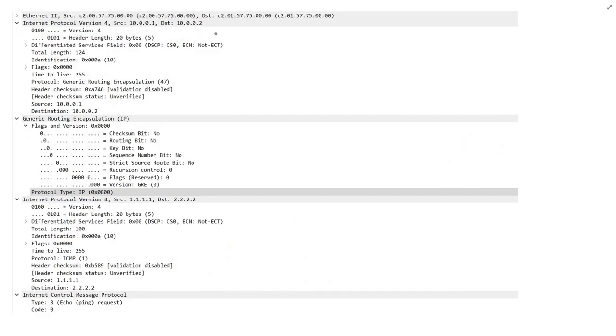In Wireshark, the GRE packet looks like this. As you can see, this one is the outer packet. Here is the GRE header. You can see here, this one is the inner packet and finally the ICMP packet.